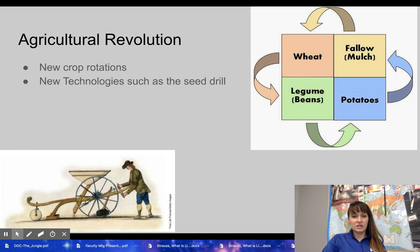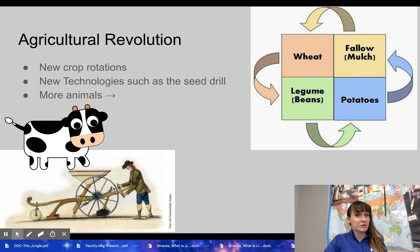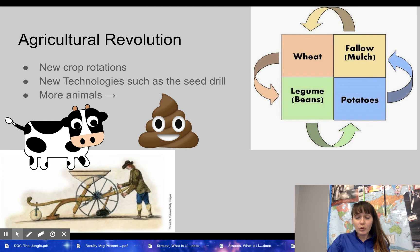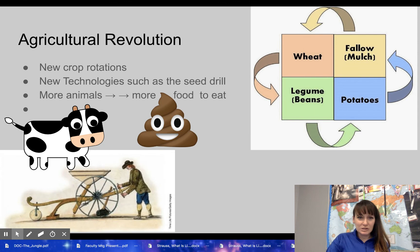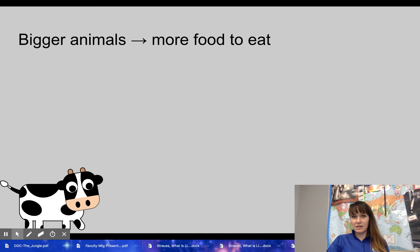New technologies like the seed drill meant you didn't have to plant every seed by hand, so you could plant more crops. With more food, you get more animals. More animals produce more manure, and more manure means you can fertilize crops better, which means more food for people. So we rely on manure whether you want to believe it or not. This cycle continues — more food, more animals — and this has a lot of different results.